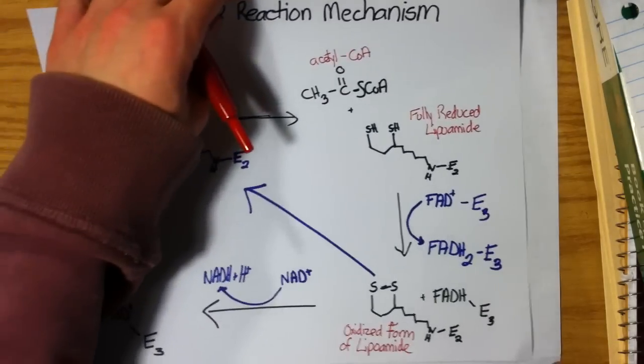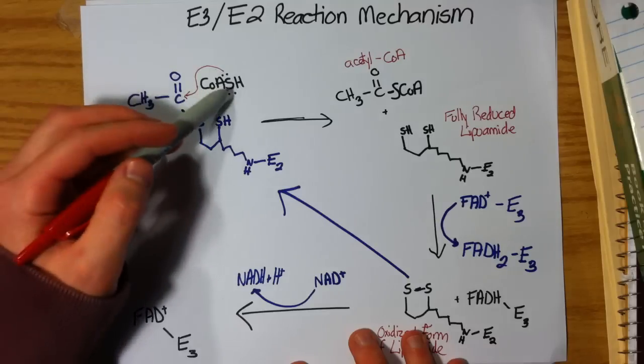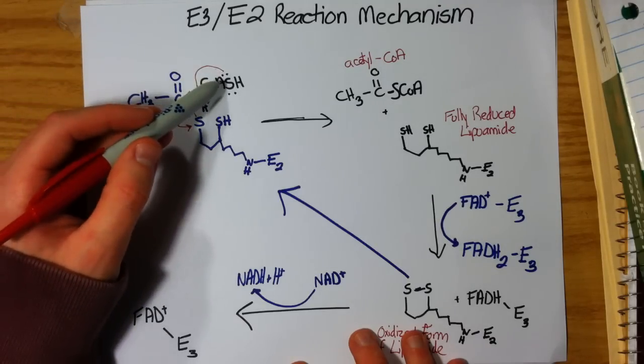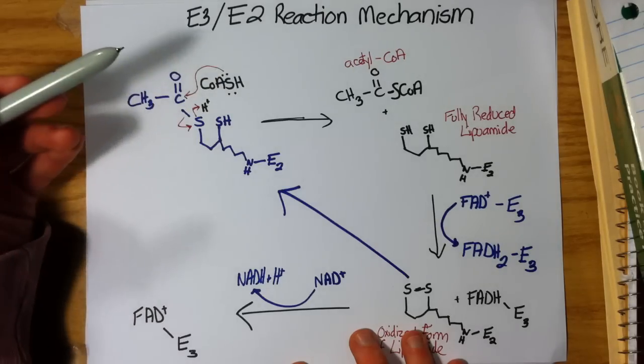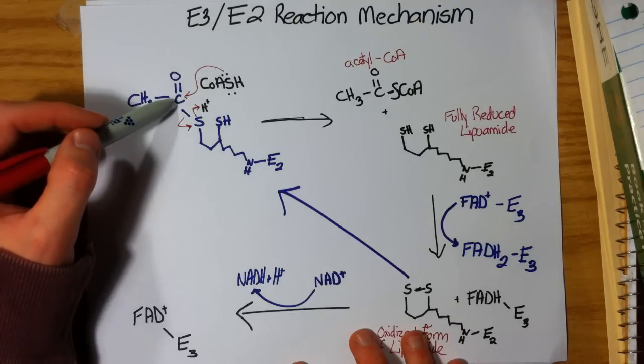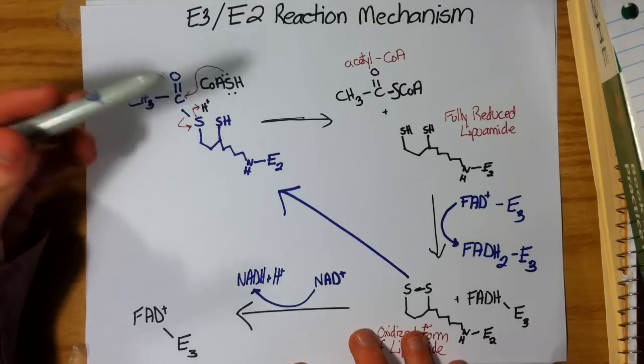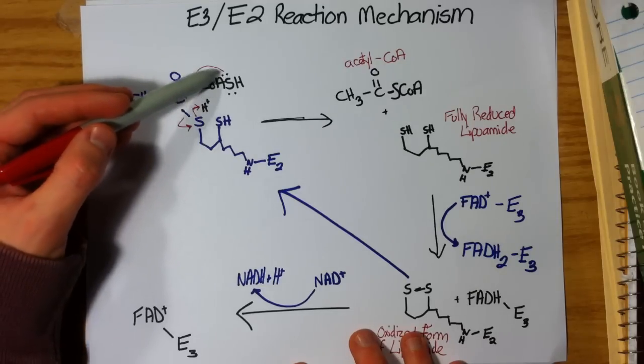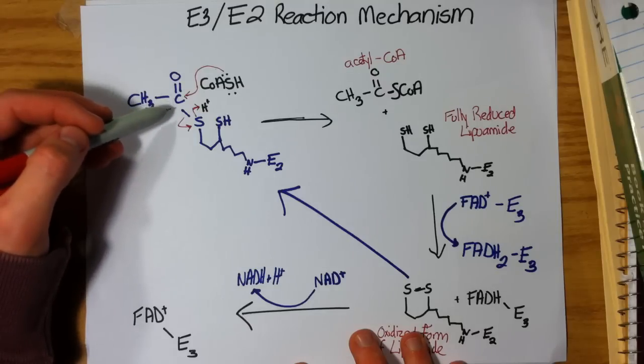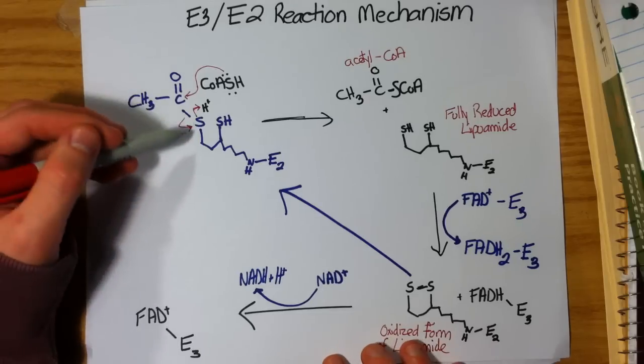So now we can move on to the E2 reaction mechanism. This is where we attach coenzyme A. This sulfur is extremely nucleophilic. It wants to create bonds to electrophiles, such as this carbonyl group. Obviously, we're seeing a pattern here. Carbonyls are very electrophilic. They are very open for attack. So the lone pair on the sulfur attacks the carbonyl carbon, and we push off these electrons from the C-S bond onto sulfur, which can pick up a hydrogen.